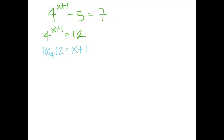Your last step now, you're going to type into your calculator log 12 over log 4. That's going to give you a decimal approximation of that value. And then to solve for x, you're just going to subtract 1 off of whatever that is.